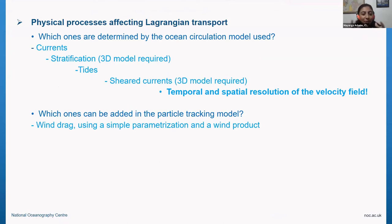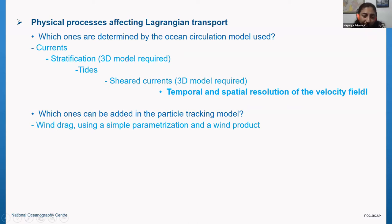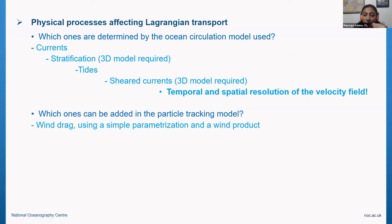Whatever you use for the ocean circulation model, your Lagrangian model will only be as good as that — you will depend highly on it to resolve processes. Some processes are determined by the ocean circulation model: currents, stratification, whether it's 3D, whether it includes tides, current effects — you need a 3D model for those. And particularly, the temporal and spatial resolution of the velocity field. It is common to rerun ocean models to get high temporal resolution fields for the period you are interested in running particles.